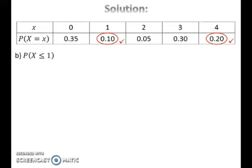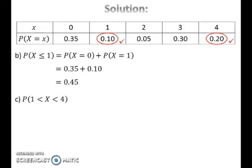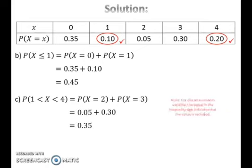To find the probability of x less than or equal to 1, take the summation of P(X = 0) and P(X = 1). To find the probability of x between 1 and 4, take the summation of P(X = 2) and P(X = 3).